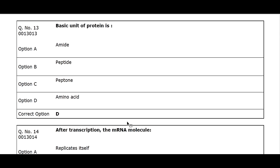Q13. Basic unit of protein is: Option A. Amide. Option B. Peptide. Option C. Peptone. Option D. Amino acid. Correct option D.